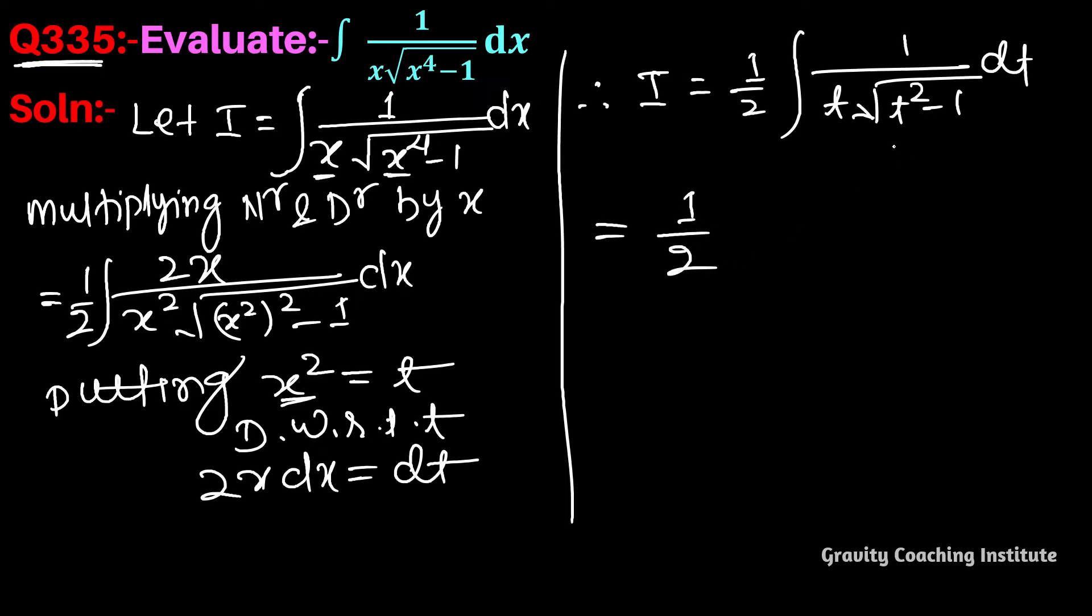This gives 1 by 2, and this is the formula for sec inverse t. So equal to 1 by 2 sec inverse, and we put the value of t, which is x squared, plus constant.